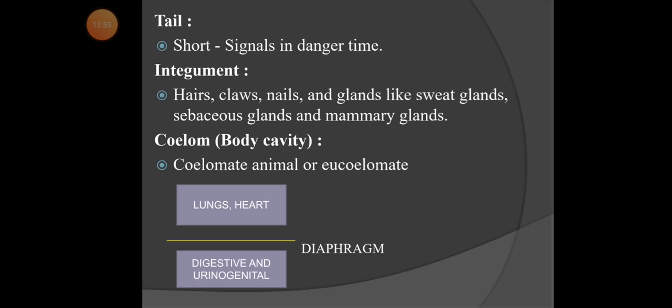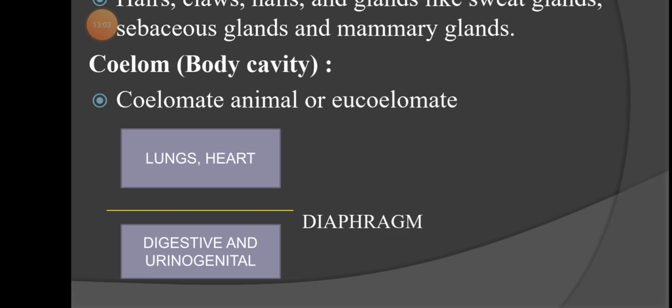In the rabbit, the coelom is present from the early stage to the end of life. There are two body cavities — an upper cavity and a lower cavity. In the upper cavity, lungs and heart are present. In the lower cavity, digestive and urinogenital (excretory) parts are present. The two cavities are separated by the diaphragm.